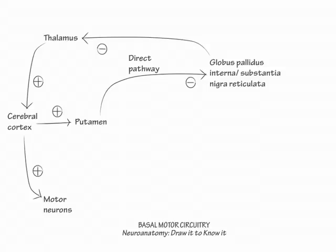Overall, then, the direct pathway is an excitatory pathway. Next, we will draw the indirect pathway, which incorporates several of the same steps as the direct pathway. Both begin with corticostriatal excitation of the putamen, and end with globus pallidus interna and substantia nigra reticulata inhibition of the thalamus.